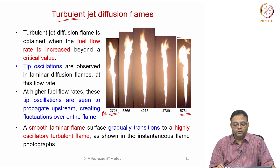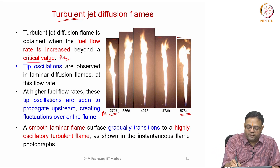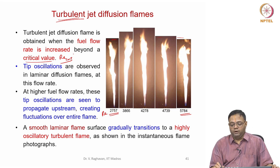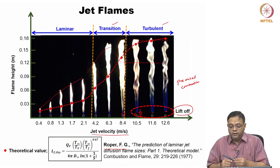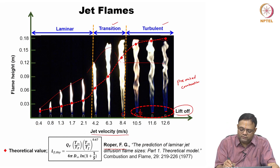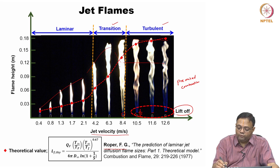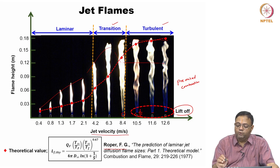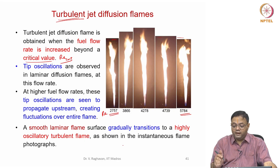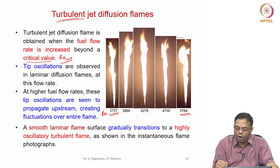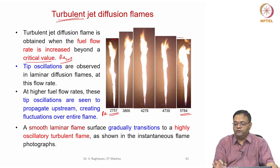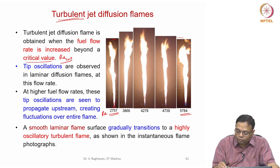In the turbulent regime, the fuel flow rate is increased beyond a critical Reynolds number RE_critical and the flame becomes turbulent. In the laminar case, the flame is well-behaved with minor oscillations due to entrainment disturbances. As the entire surface becomes oscillatory, the flame transitions to turbulent. In the turbulent case, tremendous oscillations occur all over the flame height, with visible blue zones, dark zones, and bright zones where soot radiation occurs.